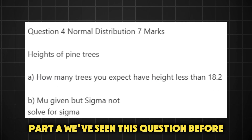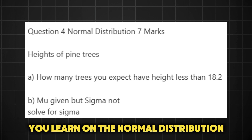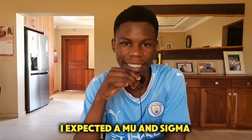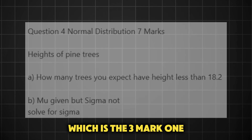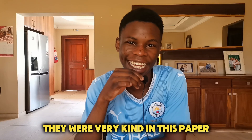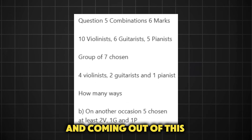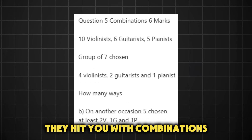Number four is the normal distribution. Part A — we've seen this question before, it comes in pretty much every paper. It's the first thing you learn on the normal distribution, so it must have been straightforward for most students. For part B, I expected a mu and sigma type question, which we did get, but they brought the easier three-mark version of it. They were very kind in this paper, but I don't imagine that helps our threshold.